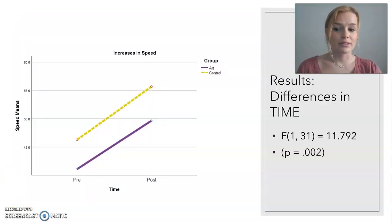So for my results, I got kind of two different categories because of my two different independent variables. So I have differences in time and differences in group. Differences in time basically means that I'm looking at the difference between the pre and the post-test scores.